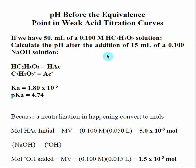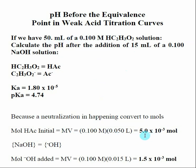The first thing we want to do is find the number of moles of each species. The moles of acetic acid equals molarity times volume. The volume is in milliliters, so we need to convert that to liters. We get that initially we have 5.0×10⁻³ moles of acetic acid.